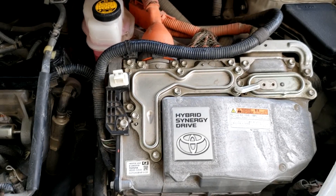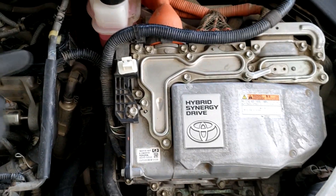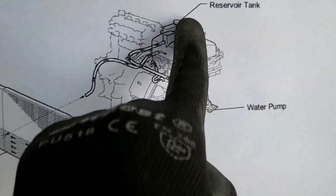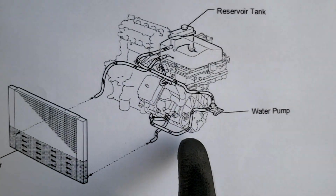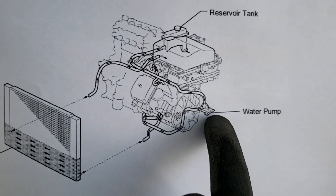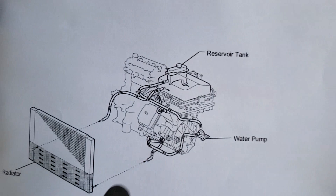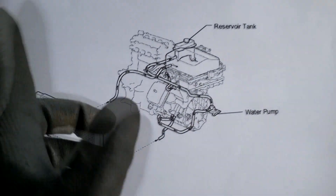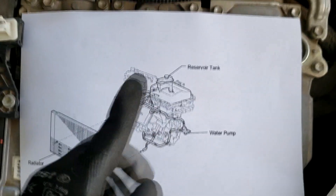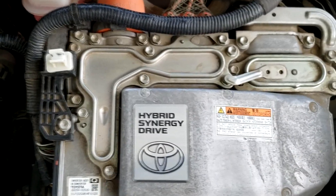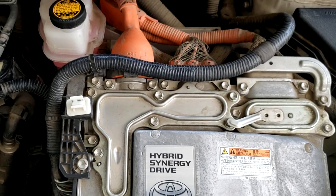Let me show you a diagram so you have an idea of how the coolant flows. This is a Prius diagram. There is a reservoir tank with long-life engine coolant and a water pump that circulates coolant throughout the engine, radiator, and inverter converter. The inverter converter operates at around 216 volts and generates significant heat, so the cooling process is very important.